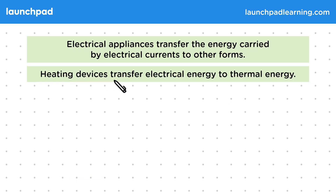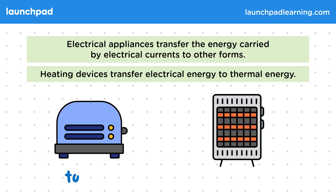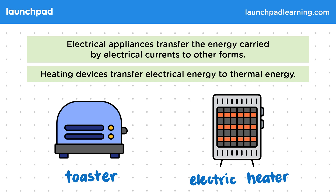Heating devices transfer electrical energy to thermal energy. Some examples of this include a toaster and other cooking devices, and also electric heaters, which can be portable if they have a battery. Other examples of appliances that transfer energy to thermal energy include hand warmers, electric ovens, and kettles.